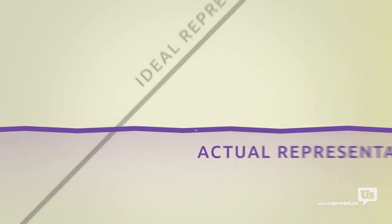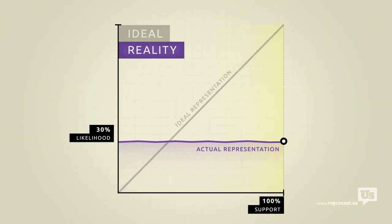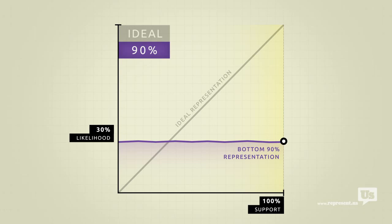So if you've ever felt like your opinion doesn't matter, and that the government doesn't really care what you think, well, you're right. But there's a catch. This flat line only accounts for the bottom 90% of income earners in America.